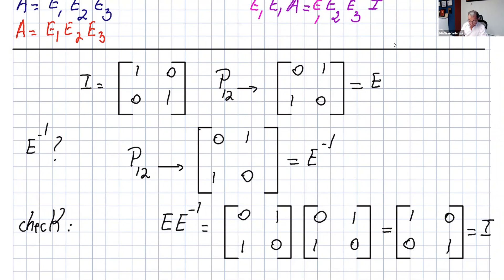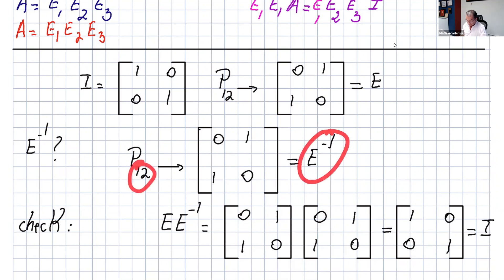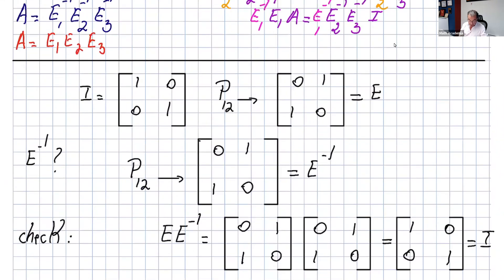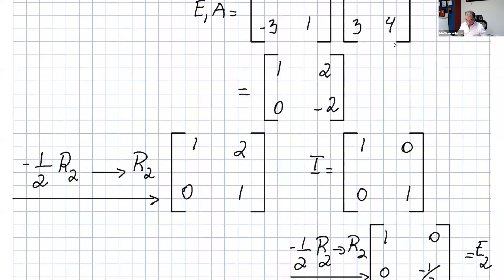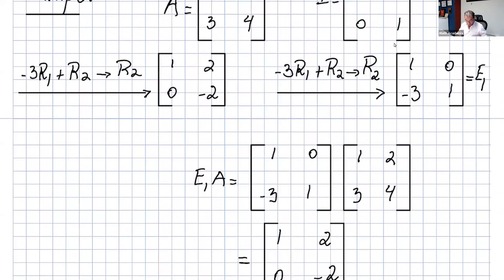Let's look at concrete examples of inverses. For a 2×2 identity, if we interchange two rows we get E. Applying the same interchange to I gives E inverse, and multiplying E by E inverse yields the identity — confirming it's correct. You can try the same verification for the other two row operations using either the inverse formulas or row operations directly.